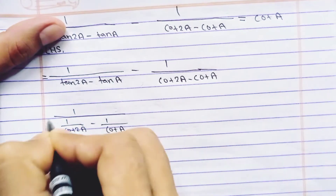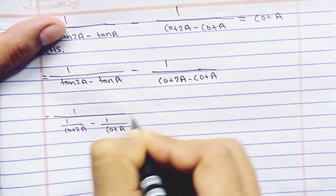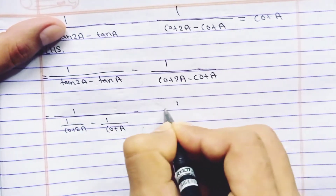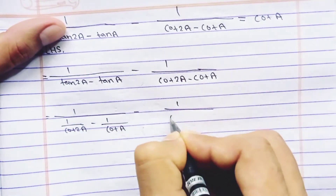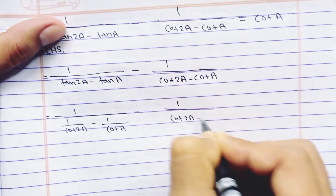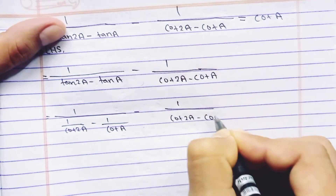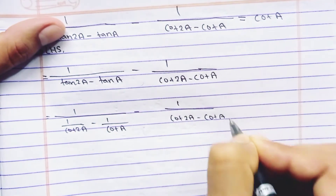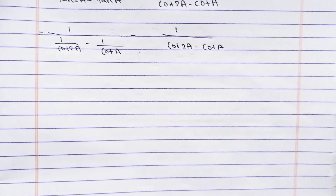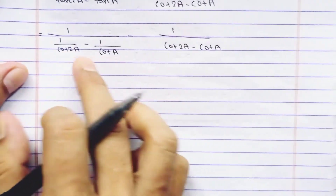Cot a minus, and write it as it is: 1 upon cot 2a minus cot a. Next step, take LCM.